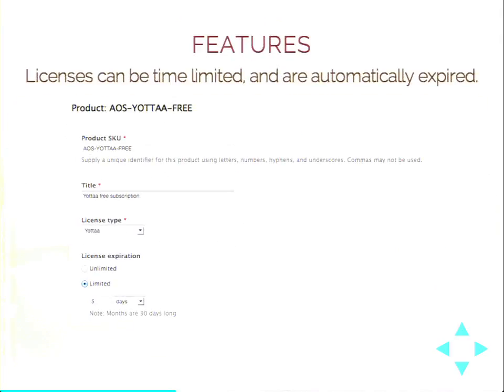A license can be time-limited. When I create the product for what I'm selling, I can say that it's valid for only a specific amount of days or only one month. So if I sold you an e-book, the access can be revoked after a month or whenever, and that is automatically expired by Cron.